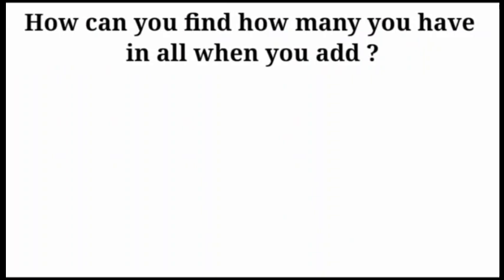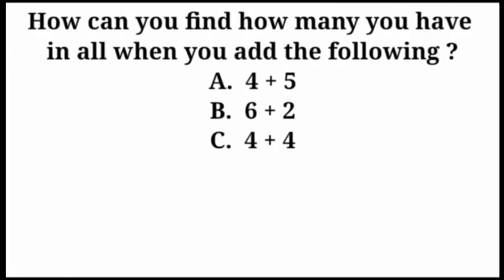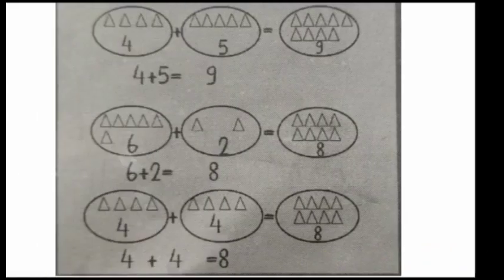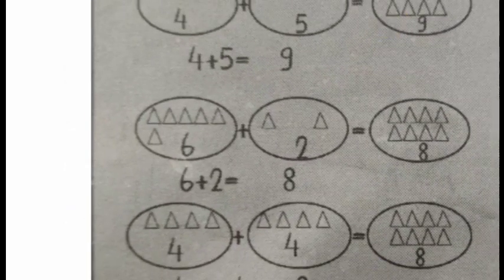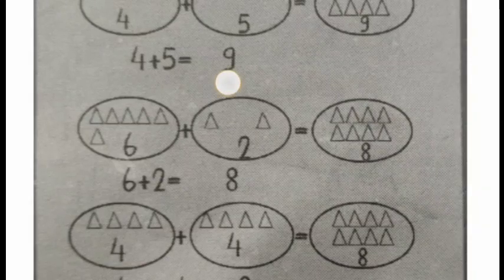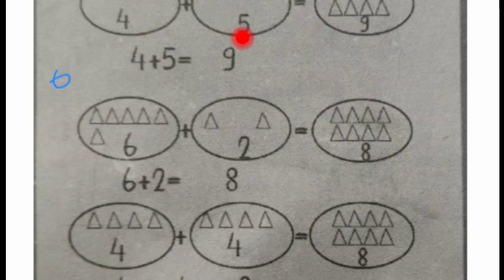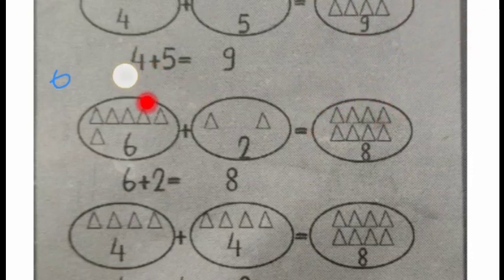How can you find how many you have in all when you add? Now observe: four plus five, six plus two, and four plus four. First, observe this picture — four things in one group plus five things. Add these four and five. How many are there? One, two, three, four, five, six, seven, eight, nine.